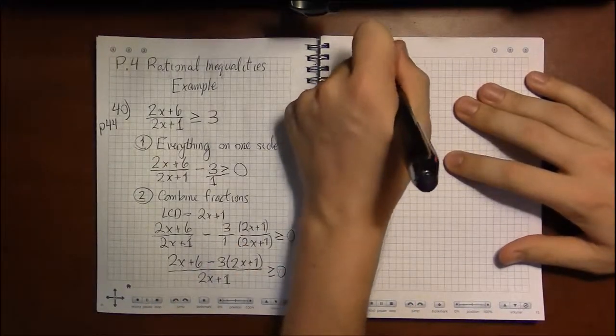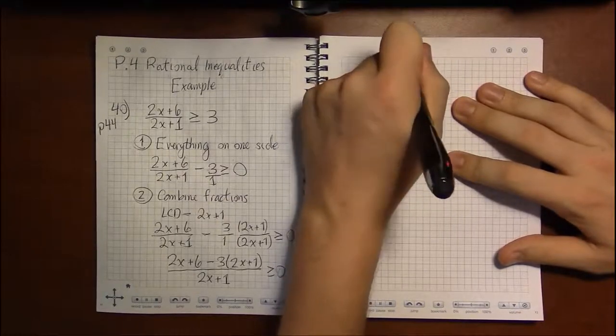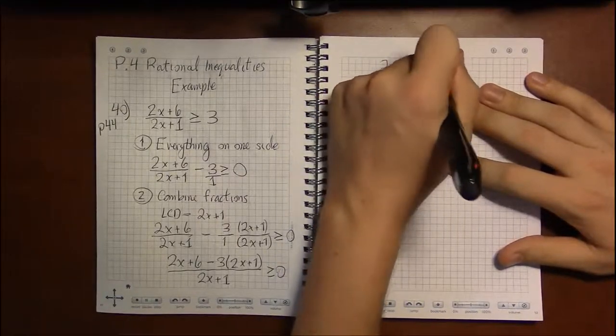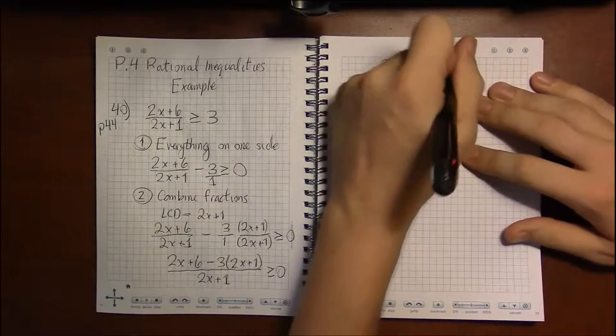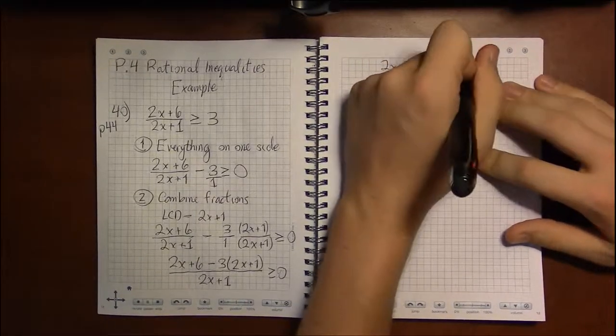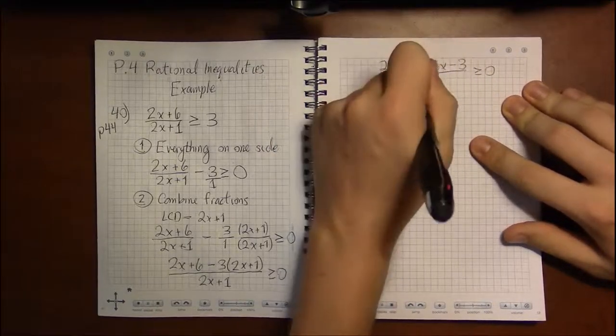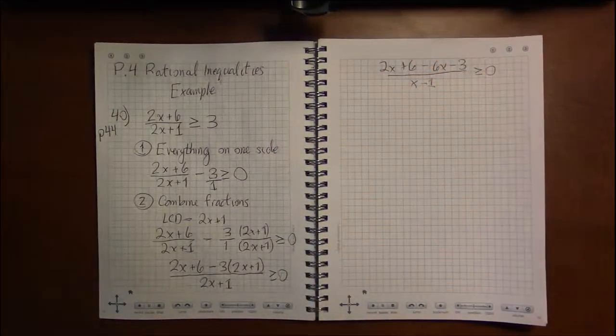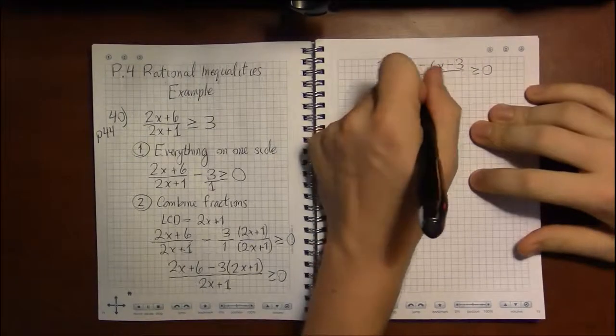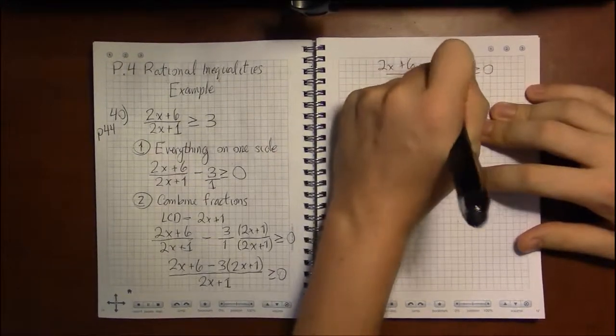Alright. Simplifying. 2x plus 6 minus 6x minus 3. That is greater than, or over 2x plus 1. And that is greater than or equal to 0. Or, sorry, not x minus 1. That is the last example. 2x plus 1. Sorry, sorry, sorry.